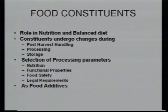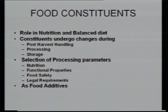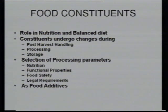The other importance of food constituents is that constituents undergo changes — carbohydrates go into simpler forms, proteins also change into simpler forms. So during post-harvest handling, during processing, and during storage, these constituents undergo changes. We should know what type of changes take place, as there could be some good changes and some bad changes. This course, which deals with preservation and preparation of value-added products, makes processing an integrated part.